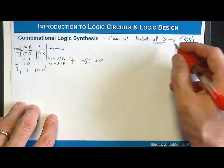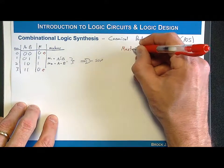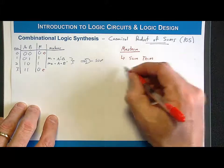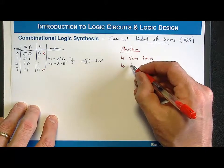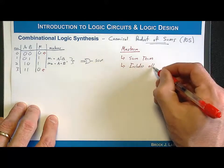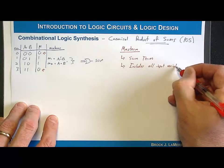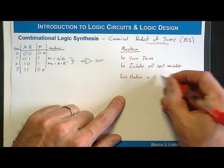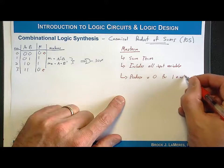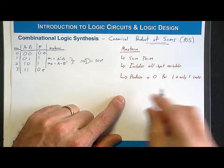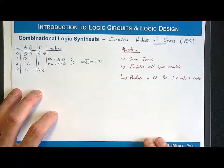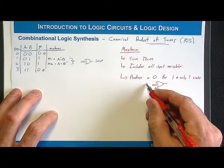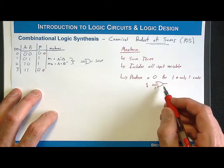The analog to a min-term is going to be what we call a max-term. A max-term has the following behaviors: first, it is a sum term; second, it includes all input variables; and finally, it will produce a zero for one and only one input code. So it's the dual of a min-term. We'll have an OR gate, and we'll insert inversions on the input variables A and B in order to get it to produce a zero for one and only one input code.